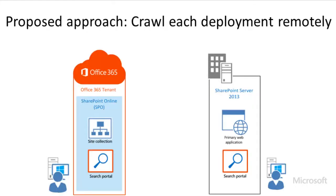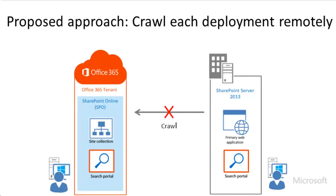To enable Search Solution 1, why not use the search service in the SharePoint Server 2013 deployment to crawl the content in both deployments? If we could do that, all of the crawled content would go into a search index in the SharePoint Server 2013 deployment that users could query from the search center there. However, this isn't possible without a custom solution. Although an on-premises SharePoint Server 2013 deployment can crawl content in another on-premises SharePoint 2013 deployment, it can't crawl content in SharePoint Online.